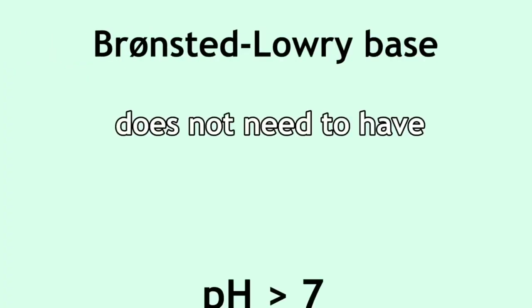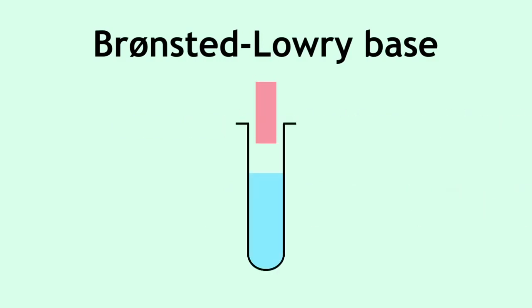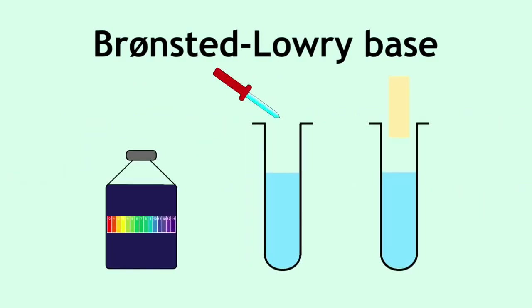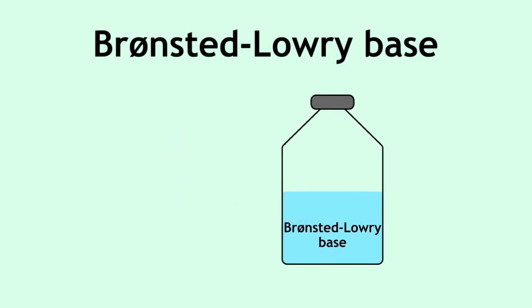So a base, according to the Bronsted-Lowry theory, does not need to have a pH above 7, or turn red litmus paper blue, or turn universal indicator solution or paper blue or purple. The only requirement is that it is able to accept protons.